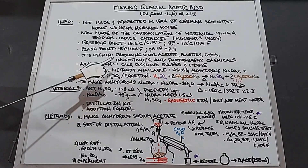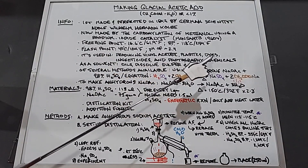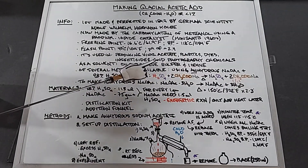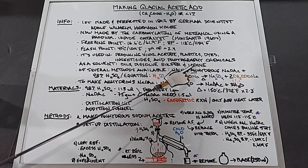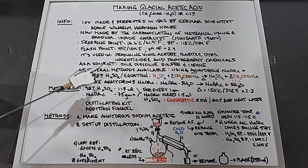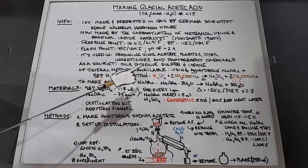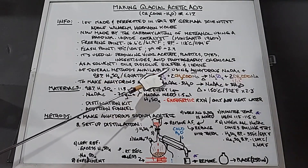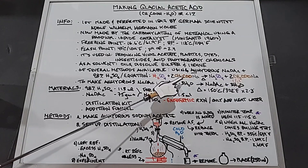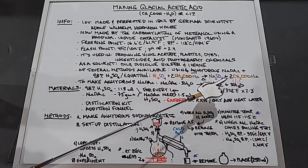It's used in producing vinyl acetate, cellulose acetate, plastics, dyes, insecticides, and photography chemicals. As a solvent it is used to disperse oils and to dissolve sulfur and iodine. Of the several methods available to make glacial acetic acid, I'm going to use anhydrous sodium acetate plus 98% concentrated sulfuric acid. The equation is: H₂SO₄ + 2 sodium acetate (anhydrous) + heat → sodium sulfate + 2 acetic acid.